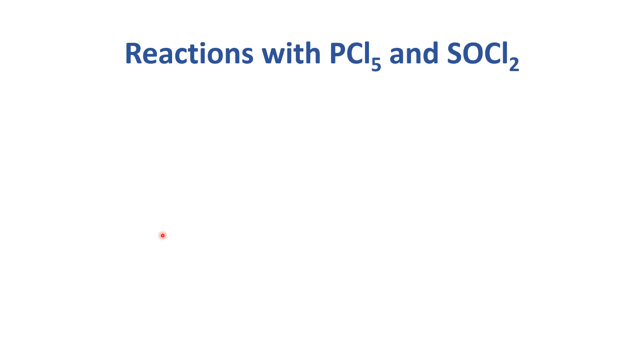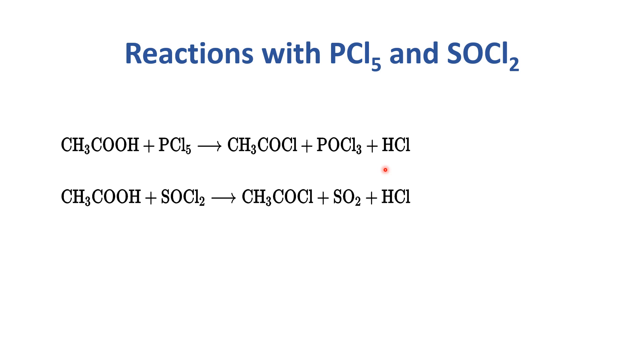First are reactions with PCl5 and SOCl2. Acetic acid reacts with PCl5 where the OH group is displaced by Cl, forming acetyl chloride plus POCl3 and HCl. Similarly, when reacted with SOCl2, the OH group is displaced by chloride, forming acetyl chloride, SO2, and HCl.